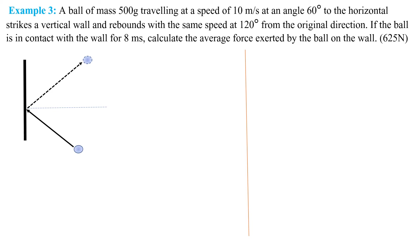This example reads: a ball of mass 500 grams traveling at a speed of 10 meters per second at 60 degrees to the horizontal strikes a vertical wall and rebounds with the same speed at 120 degrees from the original direction. If the ball is in contact with the wall for 8 milliseconds, calculate the average force exerted by the wall on the ball.